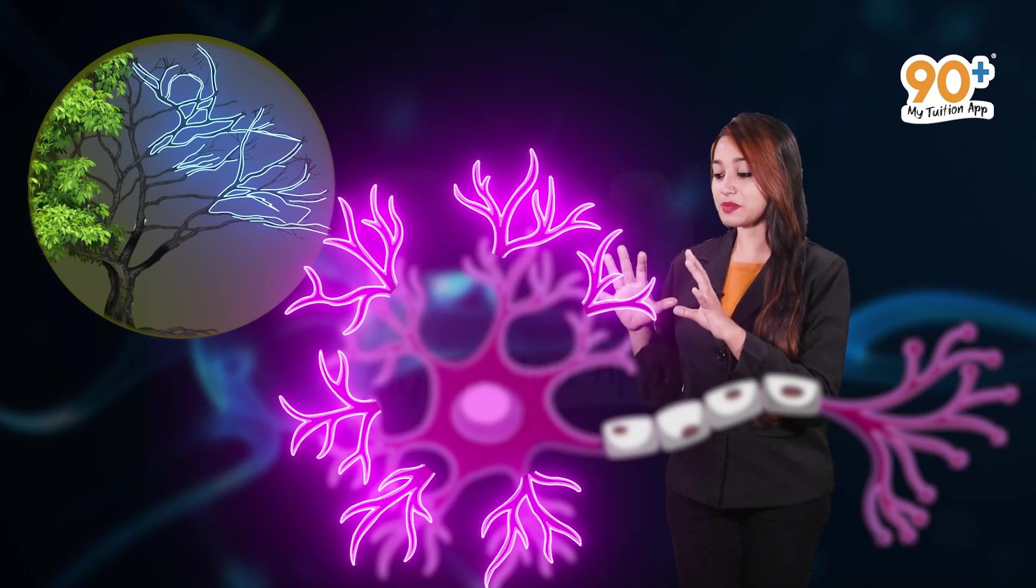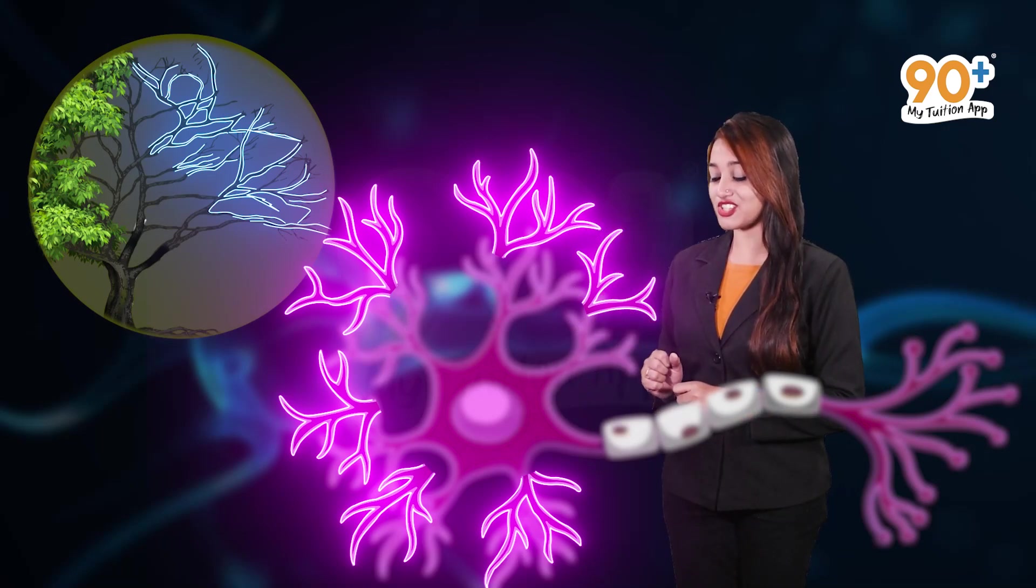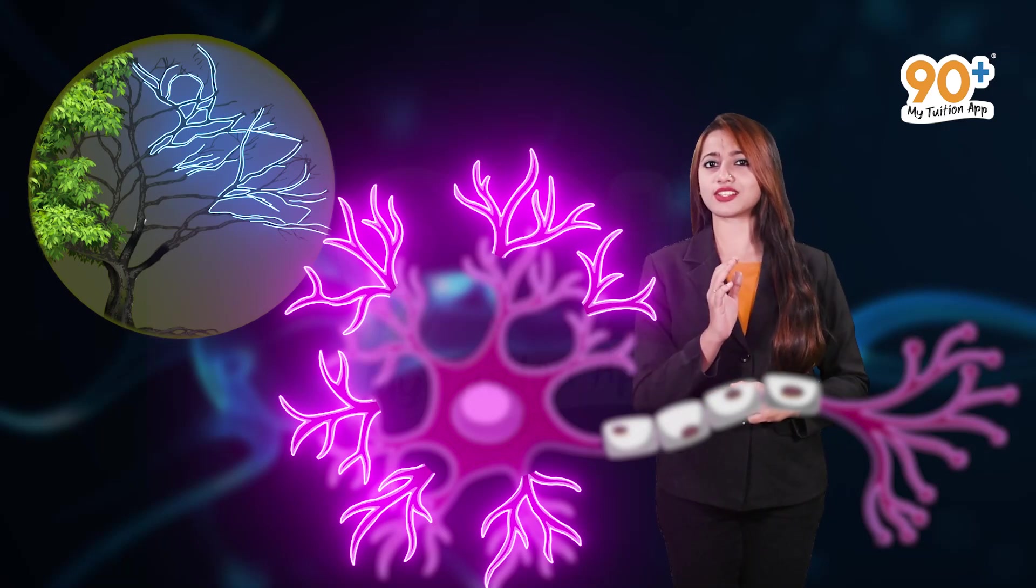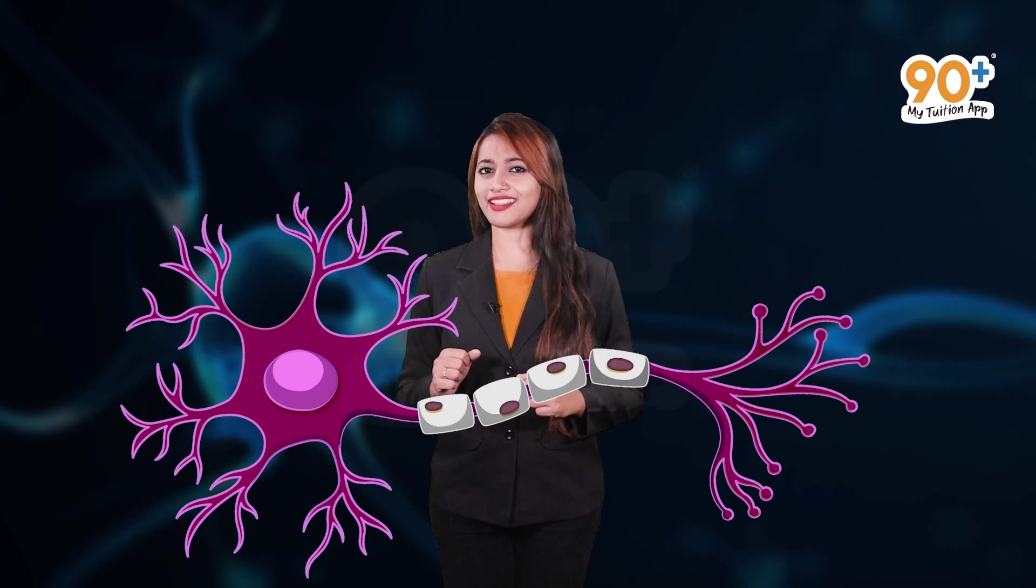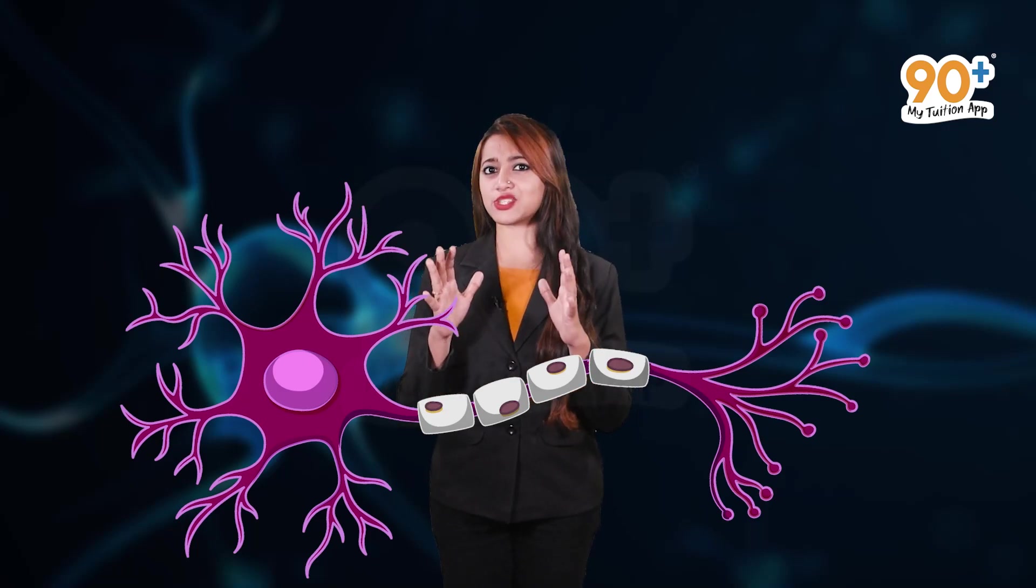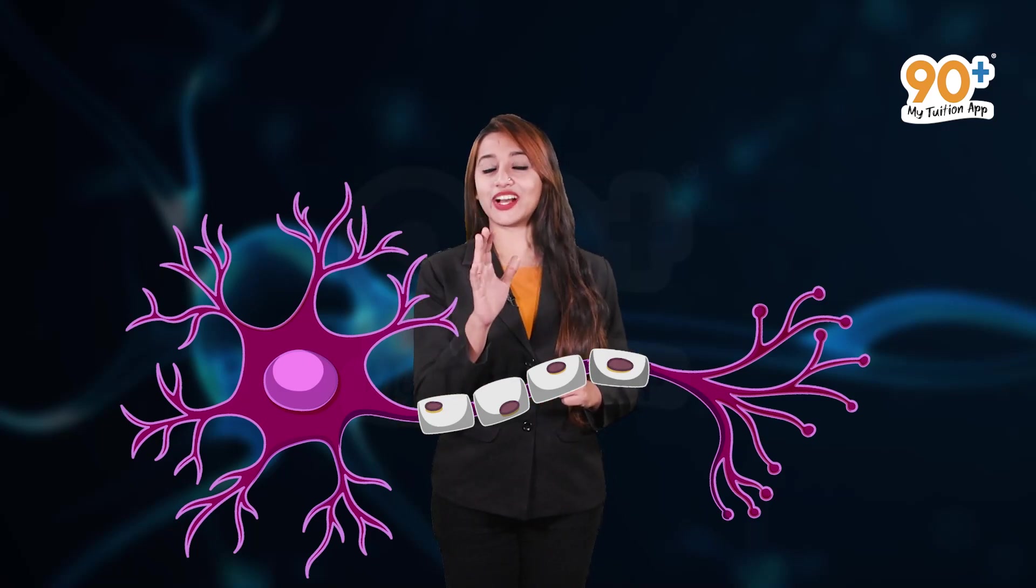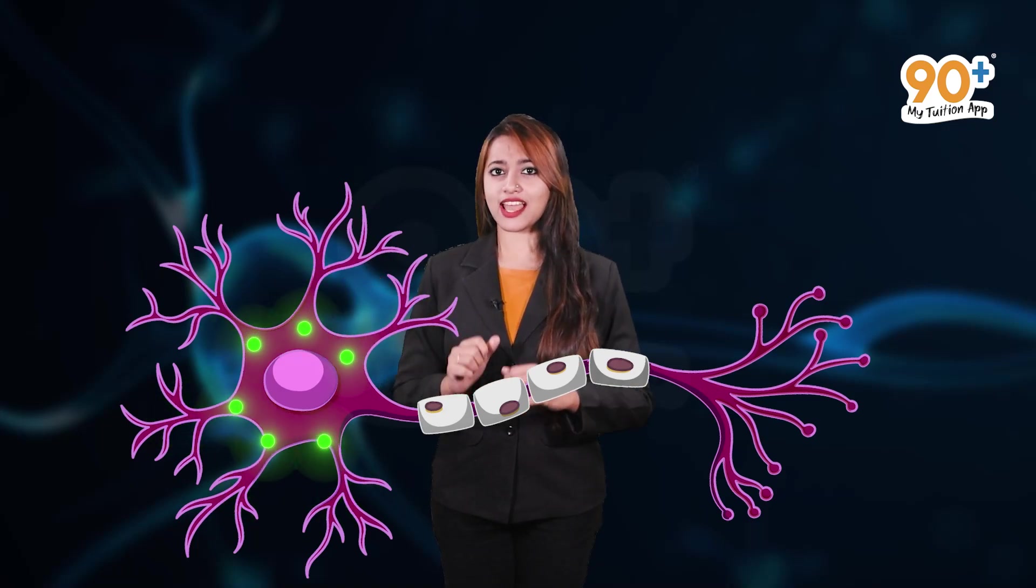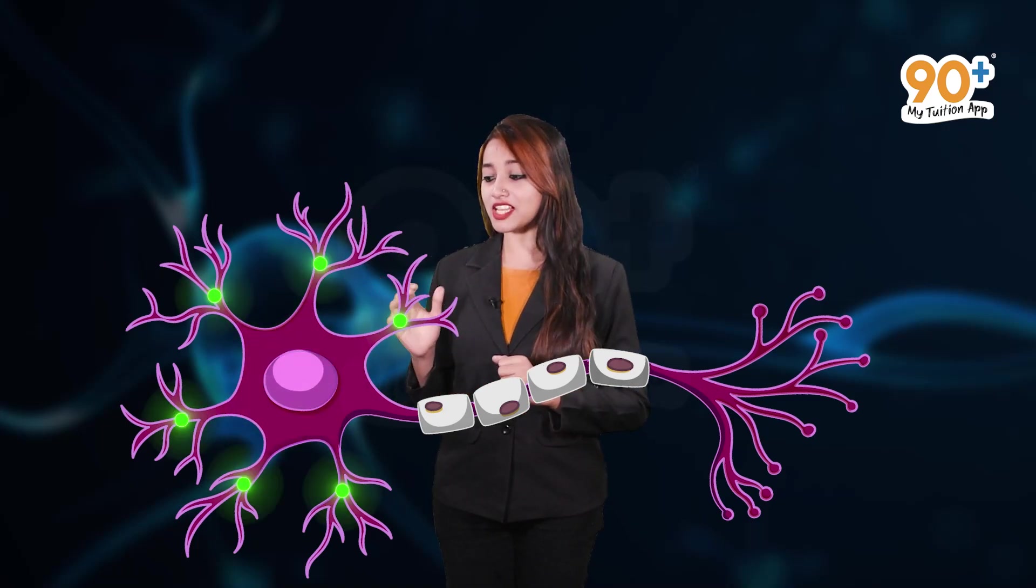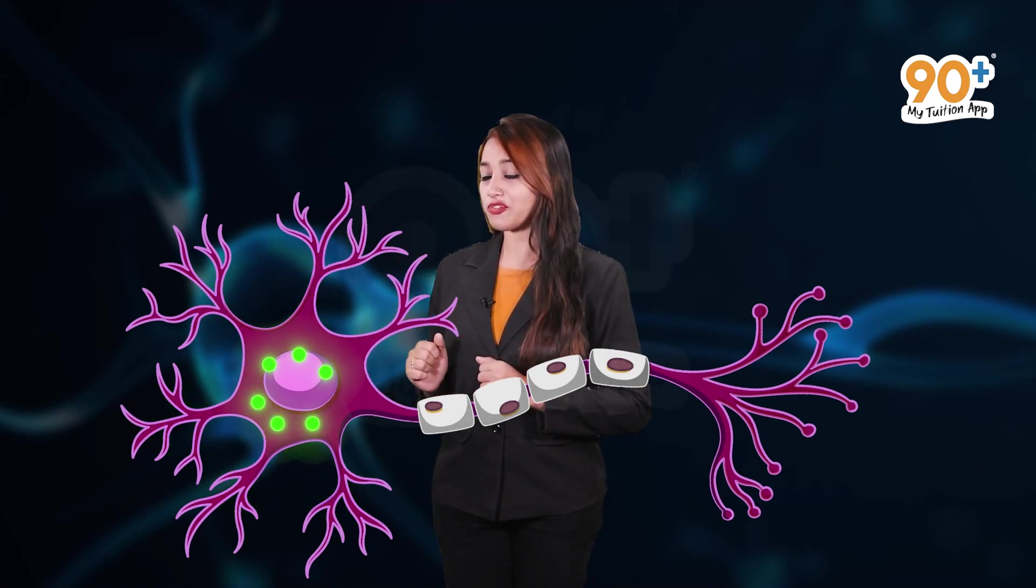These projections or subbranches in the neuron is called the dendrites. Now, let me ask you something, what is the function of this dendron and dendrites? They receive messages from the adjacent neurons and then transfer this message to the cytone of the neuron.